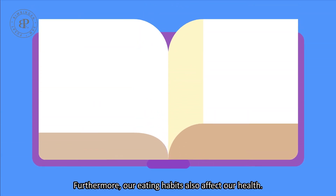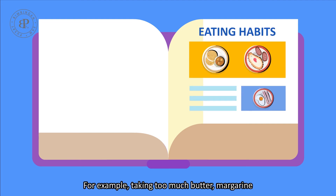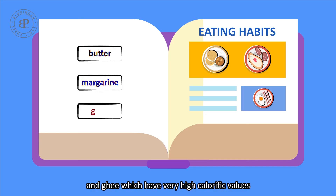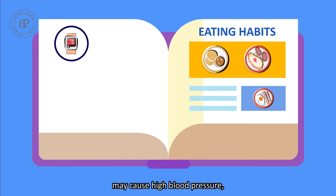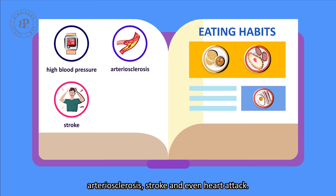Furthermore, our eating habits also affect our health. For example, taking too much butter, margarine, and ghee, which have very high calorific values, may cause high blood pressure, arteriosclerosis, stroke, and even heart attack.